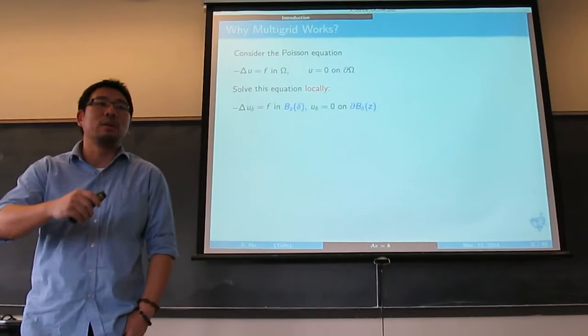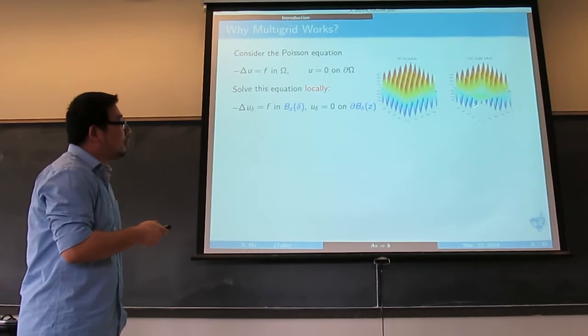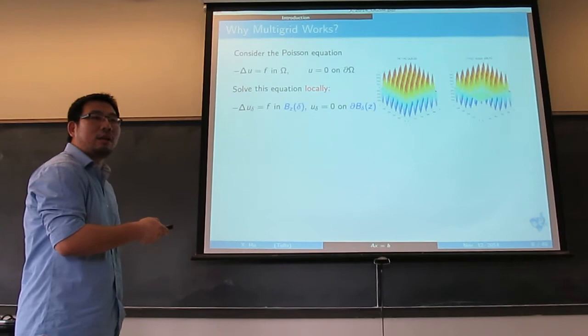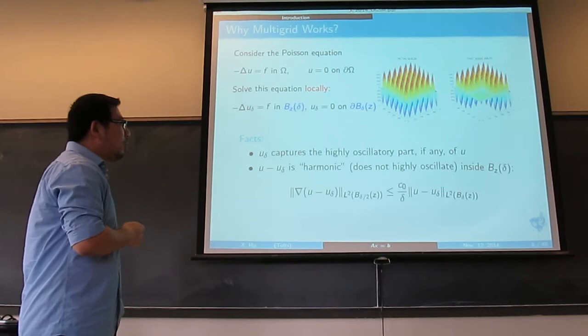Now the question is: why does multigrid work for this Poisson problem? Suppose we look at solving the Poisson equation locally — that's the initial guess. If I solve it locally, you can see all the highly oscillatory parts have been taken care of. The local solution captures all the highly oscillatory parts.